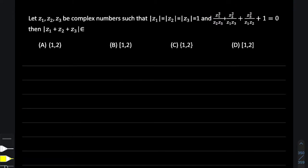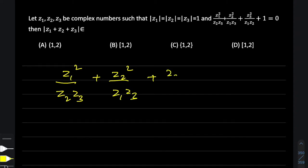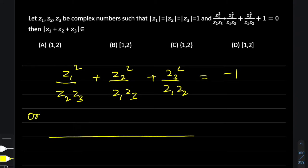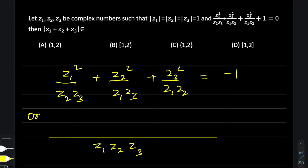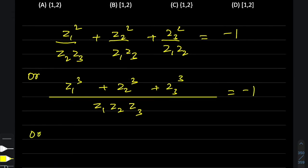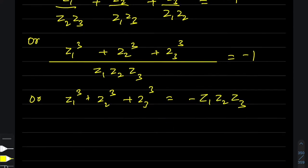Let's start with the given expression: z1²/(z2·z3) + z2²/(z1·z3) + z3²/(z1·z2) = -1. Our obvious tendency here is to take the LCM of the denominators, which clearly pans out to be z1·z2·z3, giving us z1³ + z2³ + z3³ = -z1·z2·z3 as our given expression.